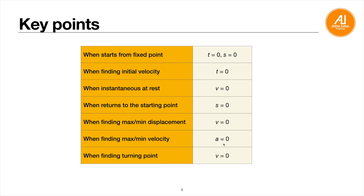There are some key words you need to know how to convert into variables. Whenever they say a particle starts from a fixed point, it means t = 0, s = 0 — initially at zero meters. 'Find the initial velocity' means when t = 0, find v, so substitute t = 0 into the velocity equation. 'Instantaneously at rest' means v = 0 — the particle is not moving — and from that you can find the timing.